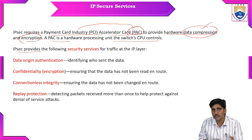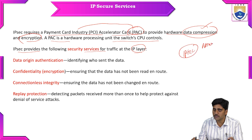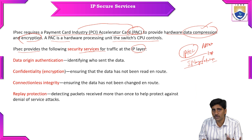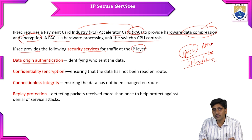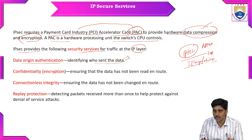IPsec provides the following security services for traffic at the IP layer, that is the network layer. The first security service is data origin authentication — identifying who sent the data, from where the data is being sent and to whom it is being sent.